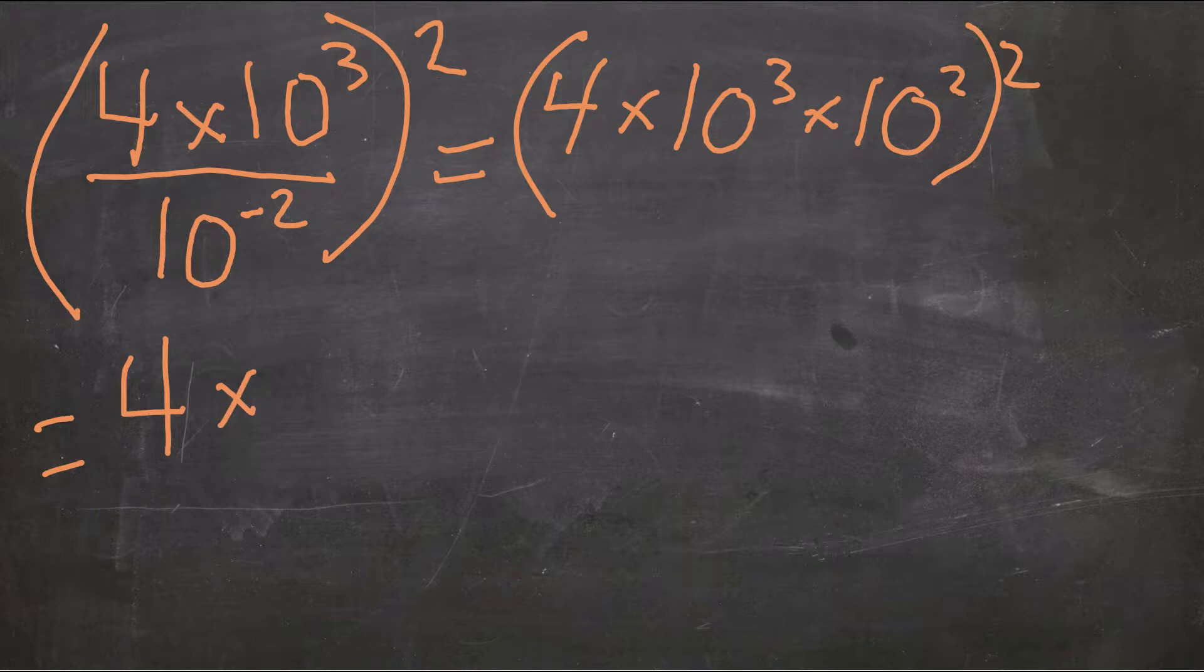I'm going to keep simplifying. I'm going to combine 10 to the power of 3 times 10 to the power of 2. That gives us 10 to the power of 5. Now we're still squaring that.